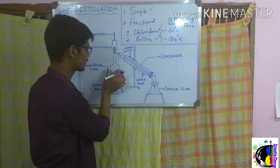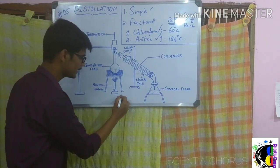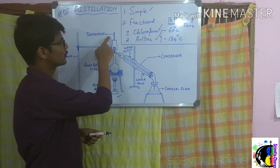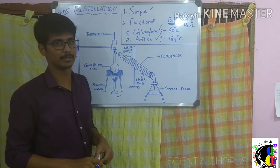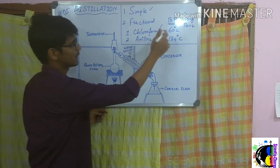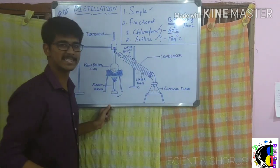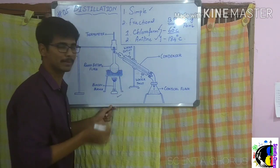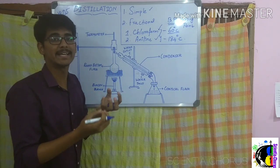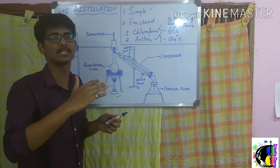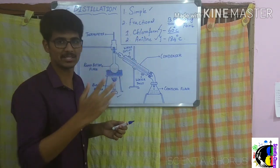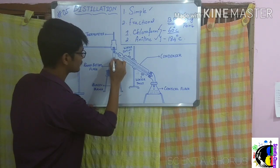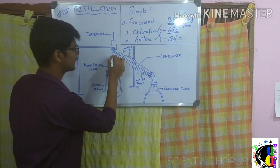We take this mixture in the round-bottomed flask and heat it using the Bunsen burner. As the temperature reaches 60 degrees Celsius, the chloroform present in the mixture slowly gets vaporized — that is, it changes from liquid to vapor state, the gaseous state. The chloroform vapor then enters into the condenser.